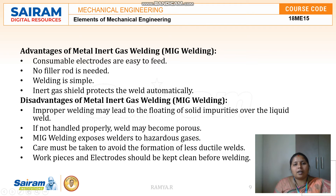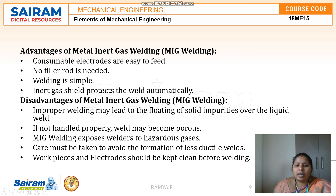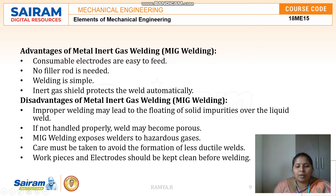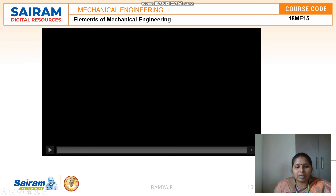The advantages of MIG welding are: it is easy to feed, no separate filler rod is needed because a consumable electrode is used, welding is simple, and the inert gas shield protects the weld automatically. The disadvantages are: floating of solid impurities over the liquid weld can make it porous if not handled properly, it is hazardous to nature, care must be taken to avoid formation of less ductile welds, and the work piece and electrode must be kept clean before welding.